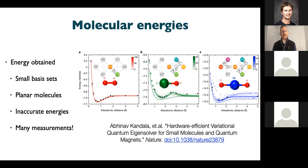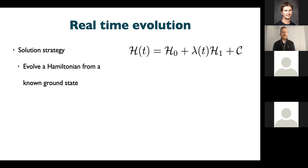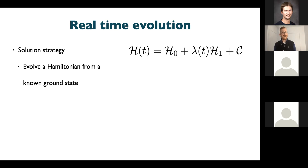That last issue — destroying the wave function on measurement — is what we're going to make the most progress on. The algorithm I'm going to talk about for preparing the wave function is real-time evolution. The solution strategy is to prepare a Hamiltonian H₀ whose wave function you know, then with real-time evolution e^(iHt), take a time-dependent Hamiltonian and slowly tune in the interactions so that it becomes a completely new Hamiltonian by the end of the time sweep.